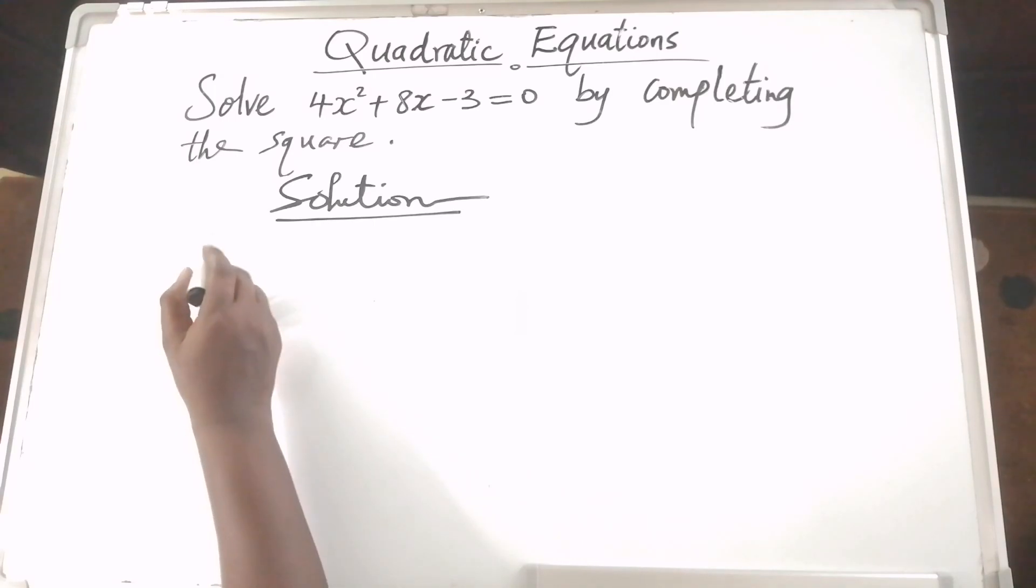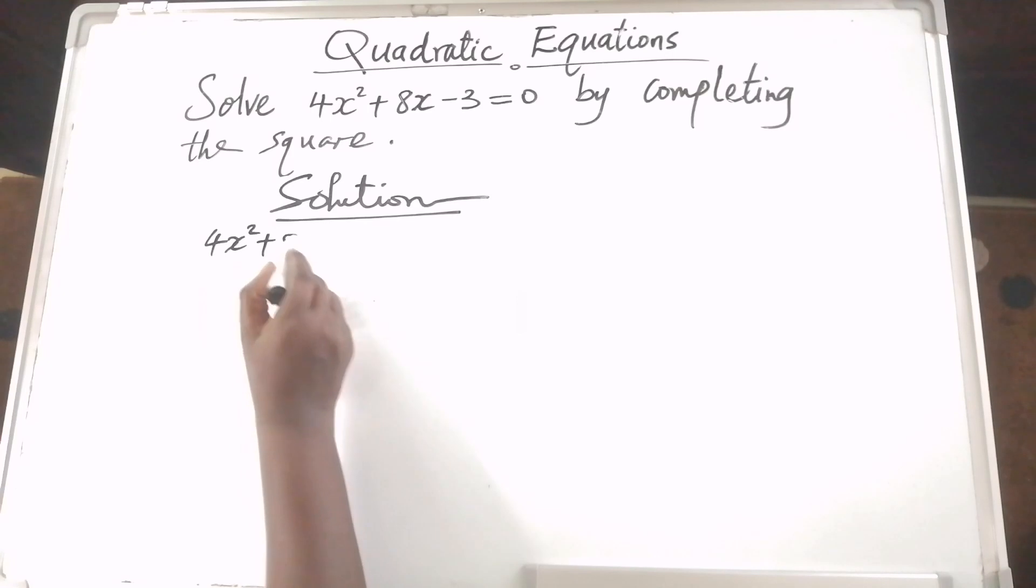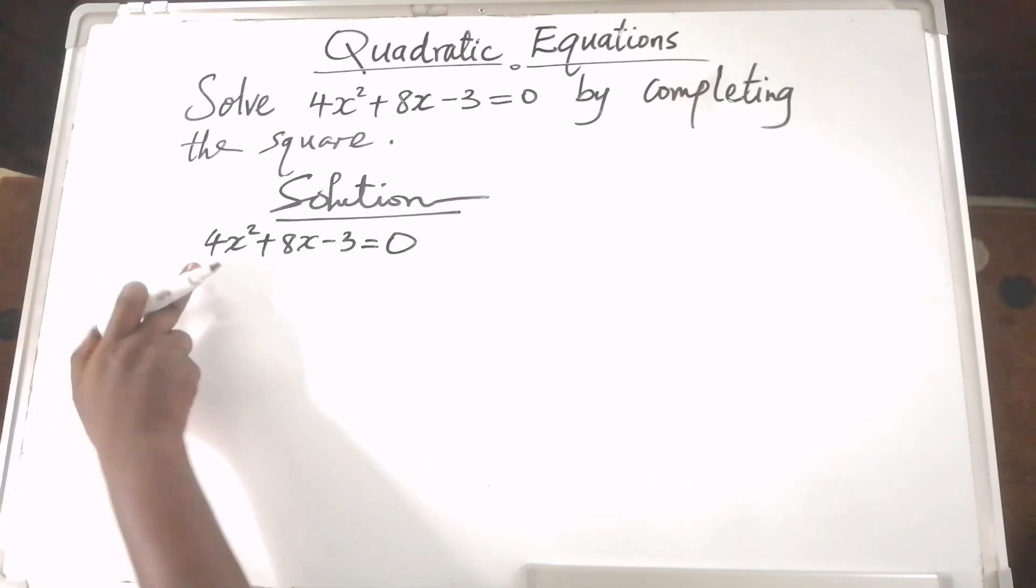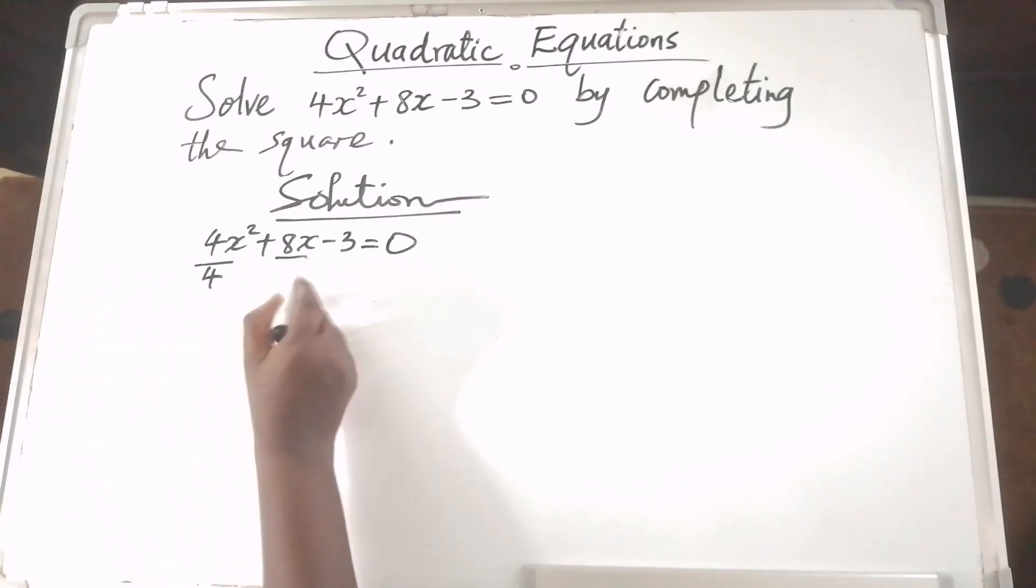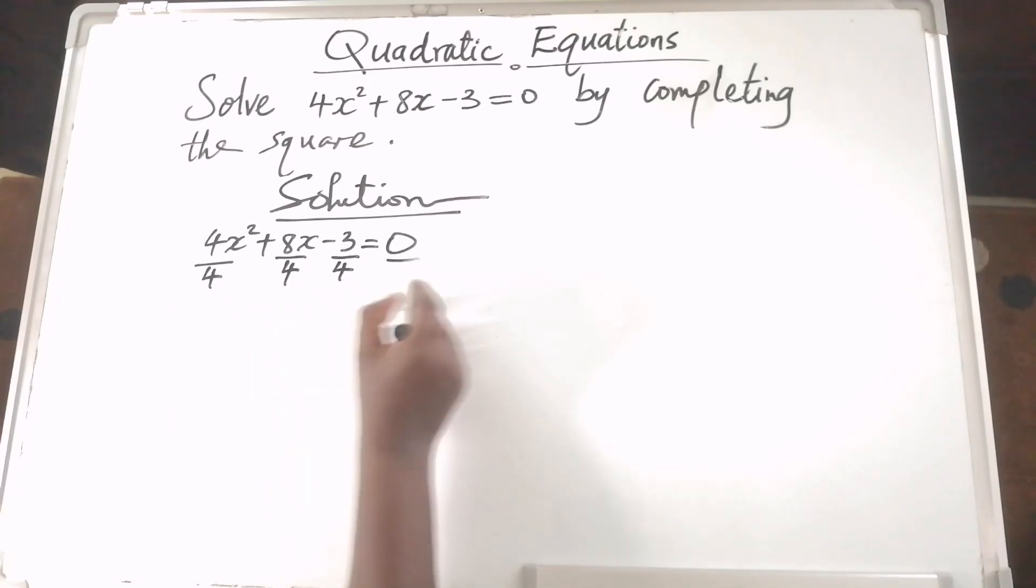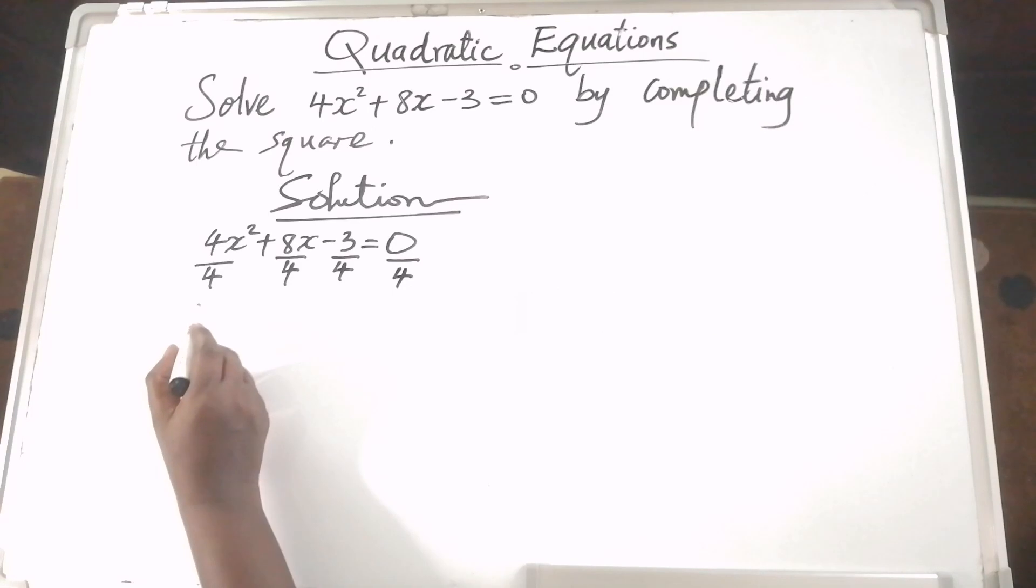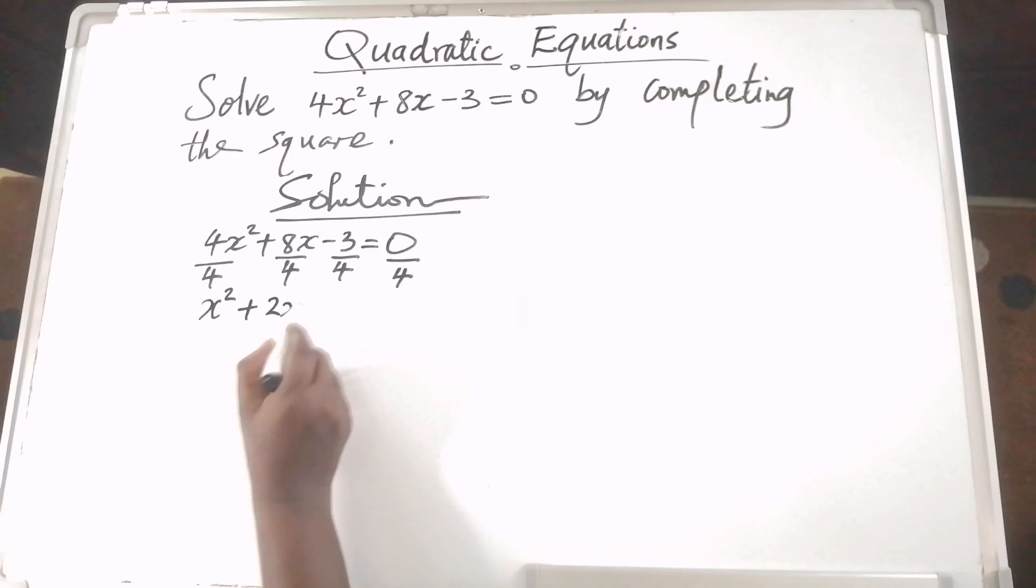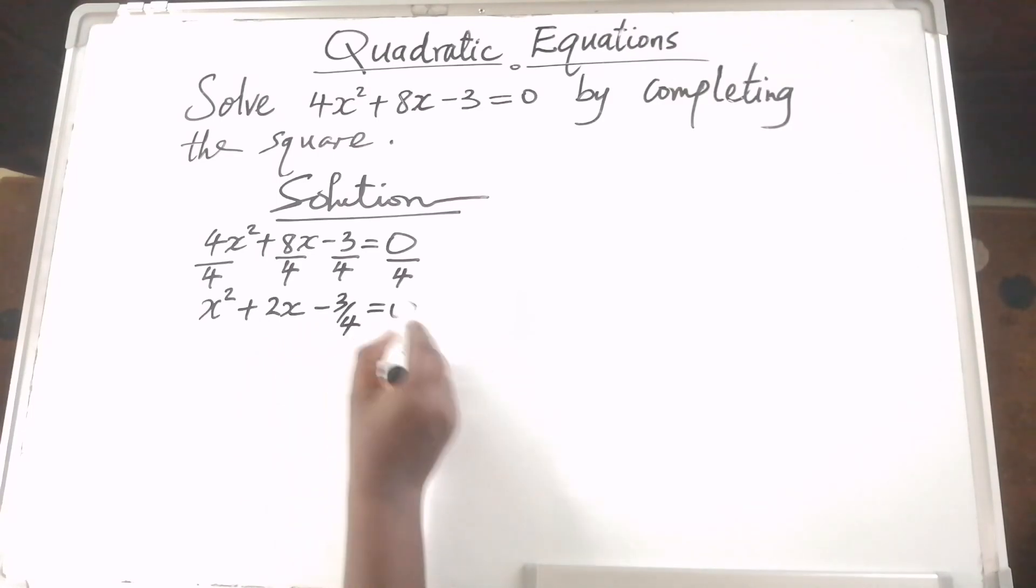We are told that 4x squared plus 8x minus 3 is equal to 0. To make the coefficient of x squared equal to 1, we divide both sides by 4. This gives us x squared plus 2x minus 3 over 4 is equal to 0.